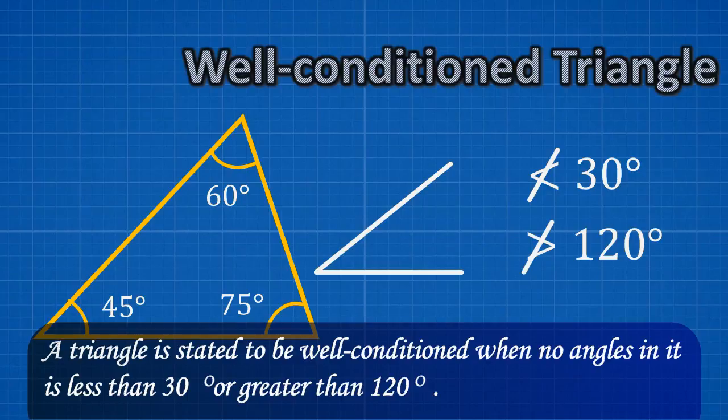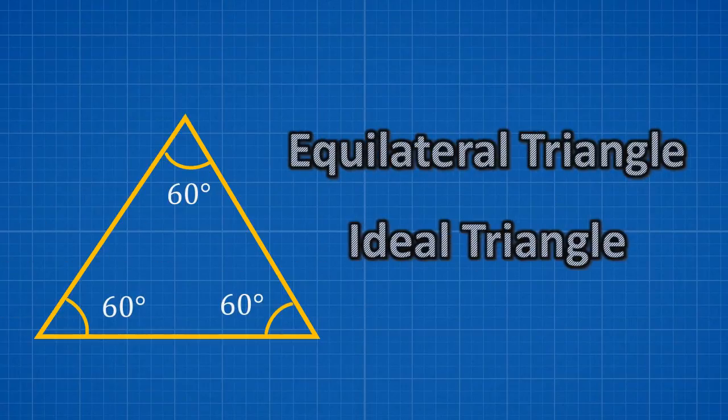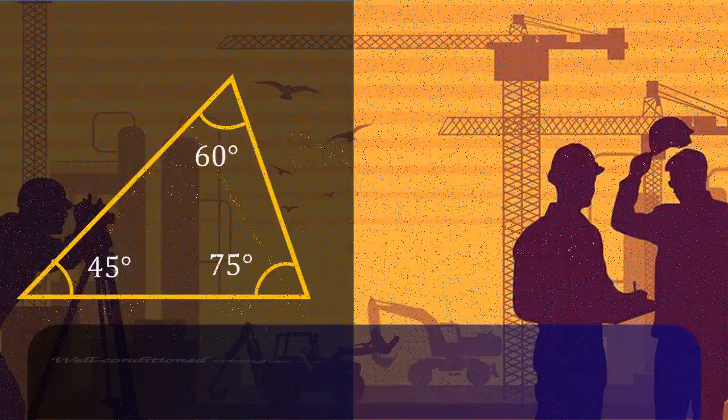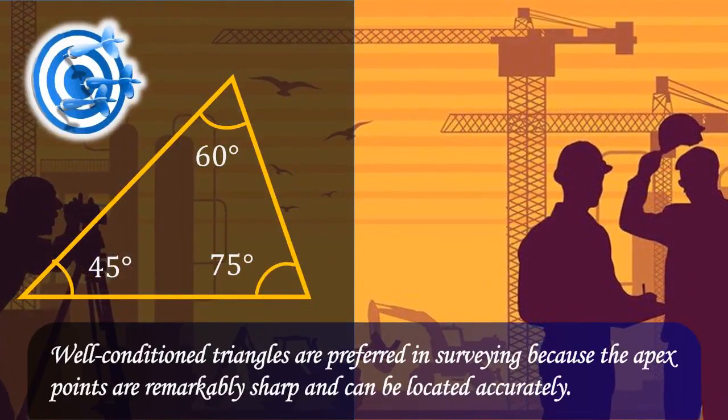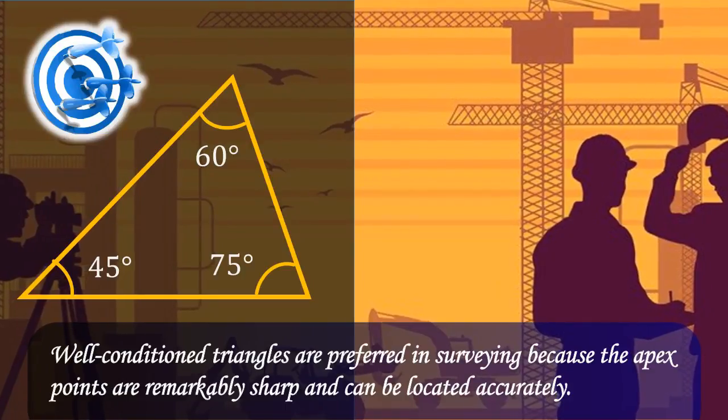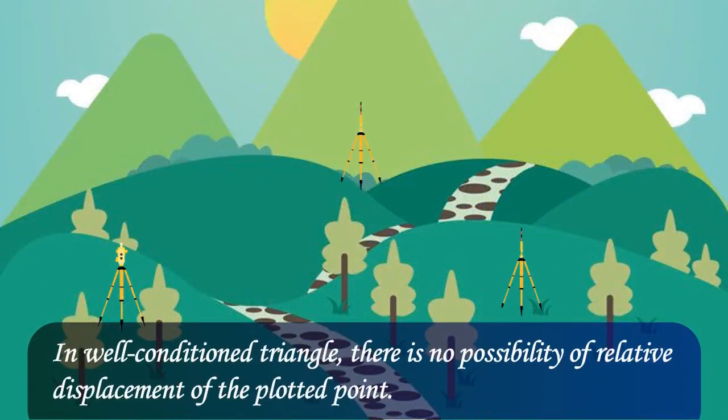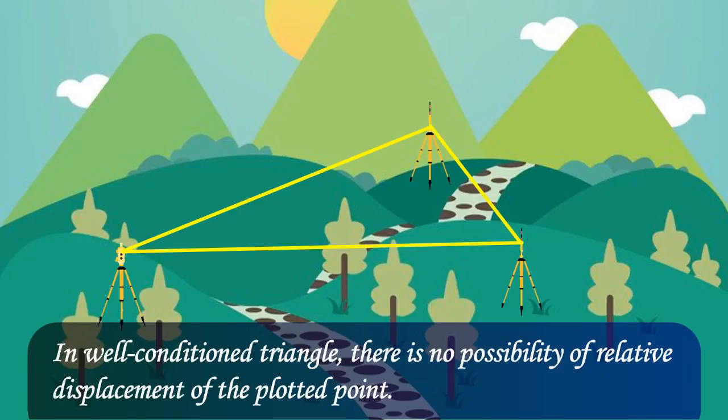An equilateral triangle is considered to be the best condition or ideal triangle. Well-conditioned triangles are preferred in surveying because the apex points are remarkably sharp and can be located accurately. In well-conditioned triangle there is no possibility of relative displacement of the plotted point.